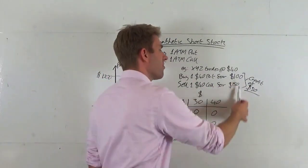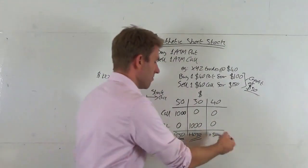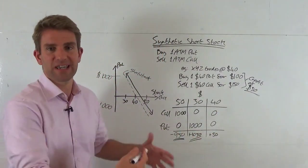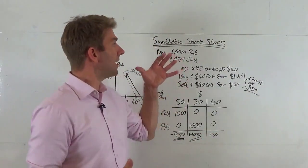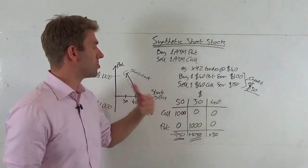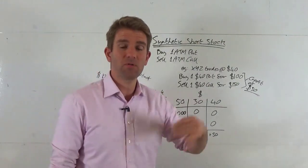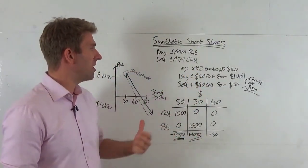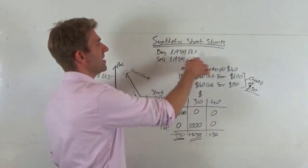If they were the same price, we'd have a net of zero. It's quite a good thing to do if the call is more expensive. We can create a synthetic short stock position if it's hard to borrow stock. We've got the flexibility - we can take off the put, we can take off the call.